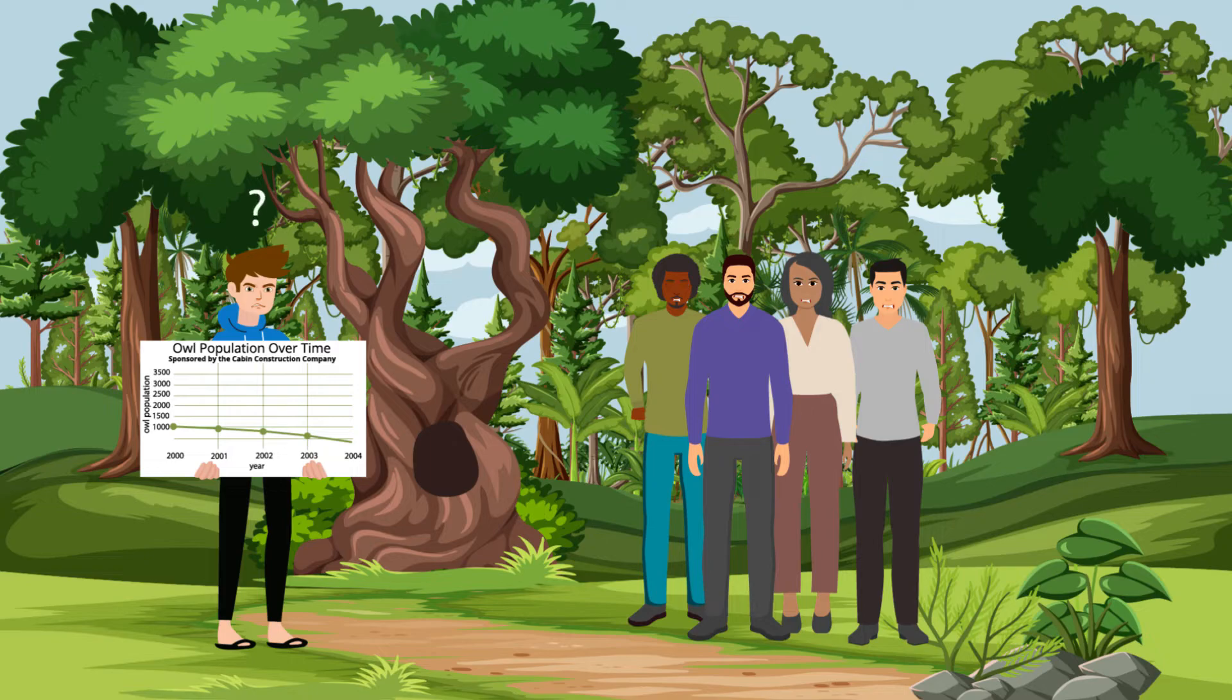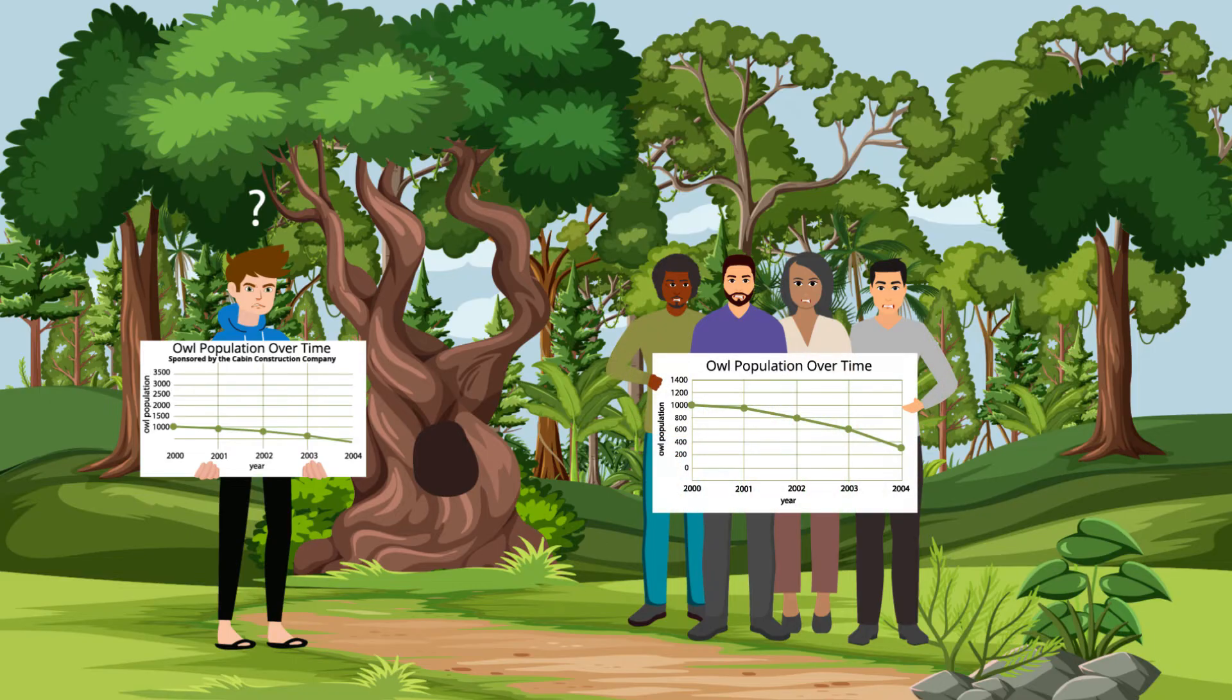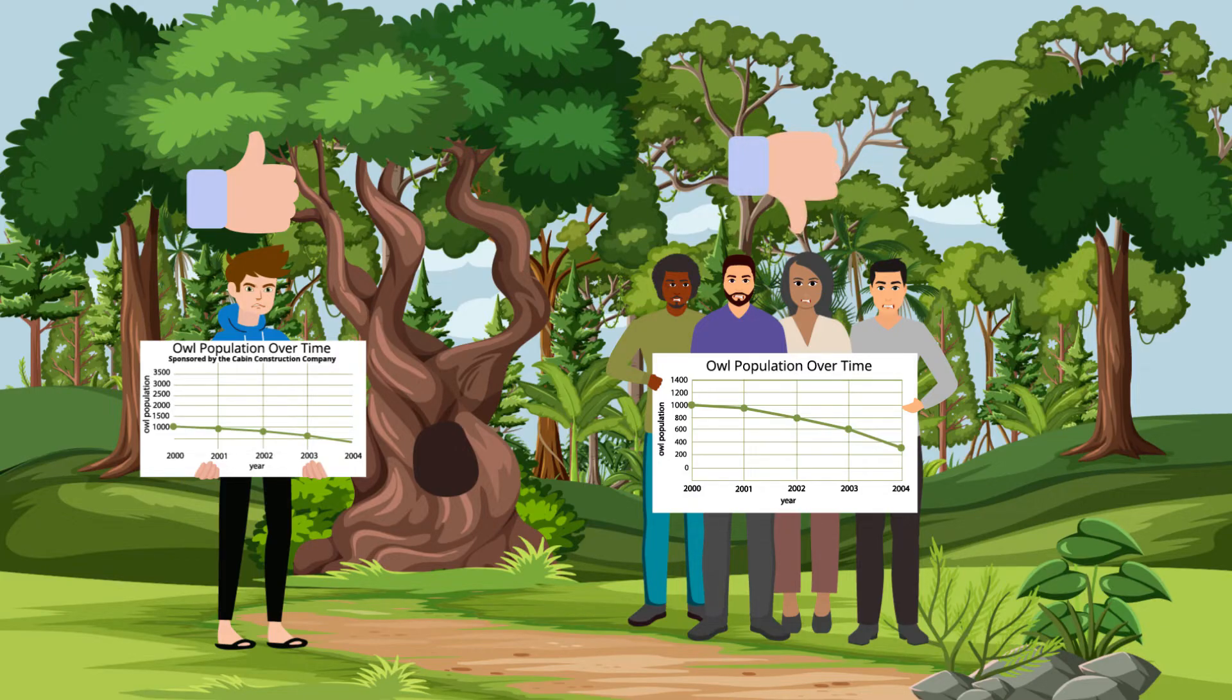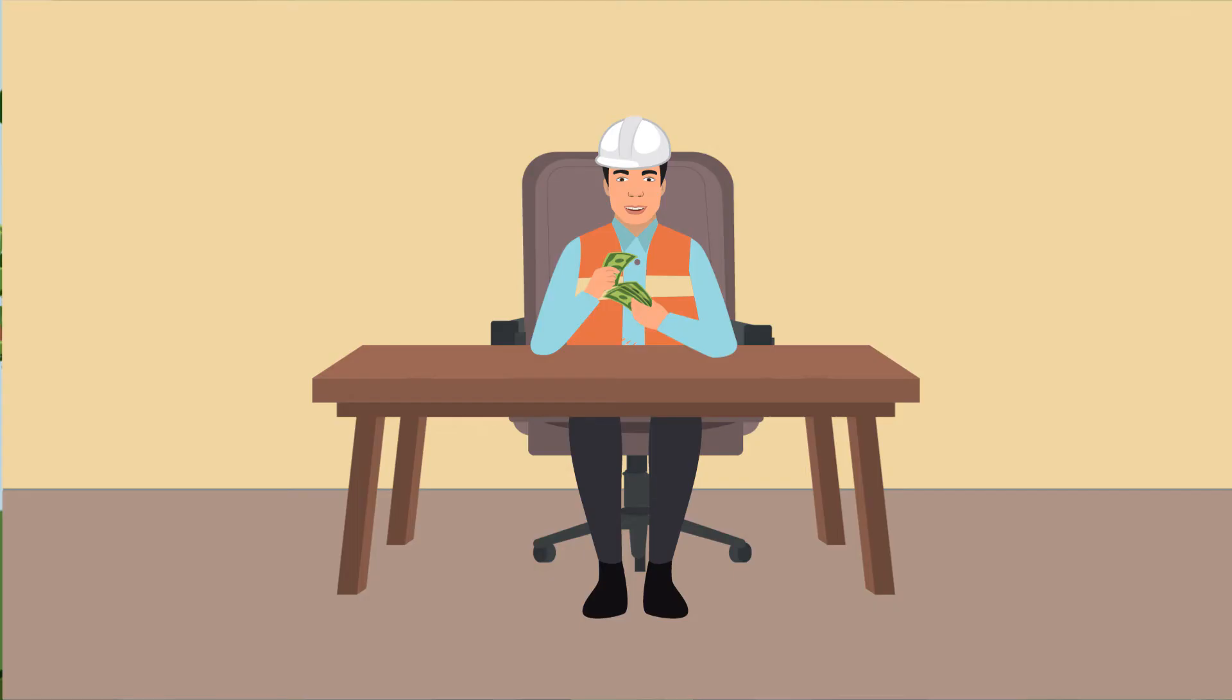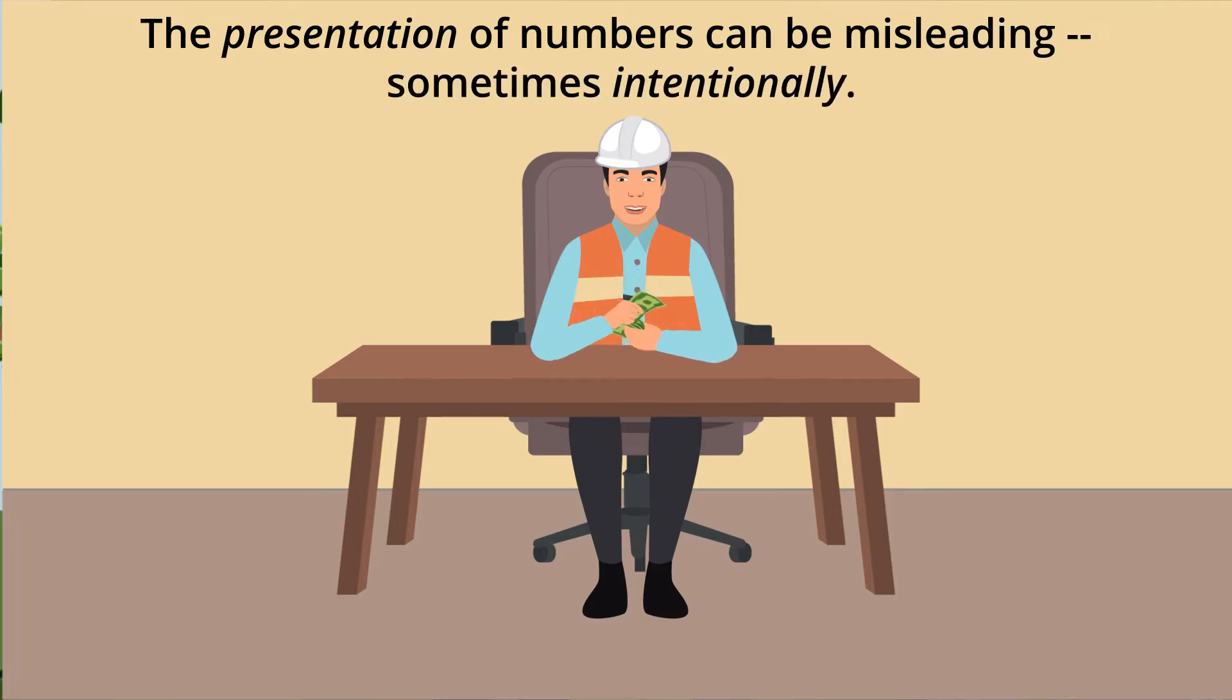In response, they show you another graph of the owl's population and condemn the other graph for misrepresenting the data. Despite having the same data points, the two graphs look so different. Your graph made it seem like the owl's population stayed strong while their graph demonstrated that it was sharply declining. Upon closer inspection, you find that your graph was sponsored by the Cabin Construction Company. And now you've learned a new lesson. The presentation of numbers can be misleading and sometimes intentionally at that.